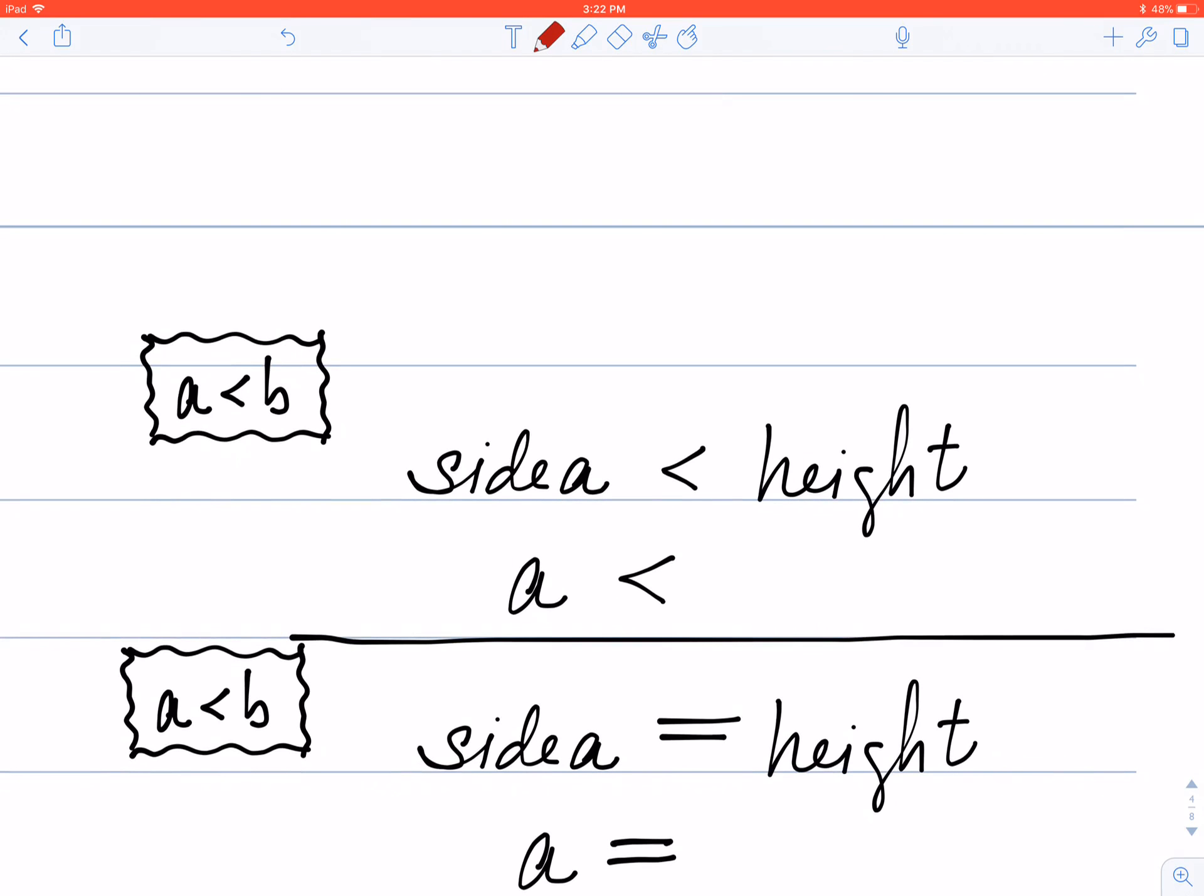Now, I just got finished telling you that every time you see height, we want to mentally replace that. In this case, we're physically going to replace it with b times the sine of angle A. So side a is shorter than the height. Side a is shorter than b sin A.